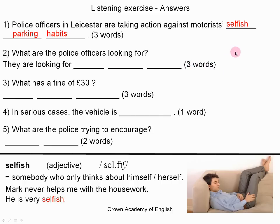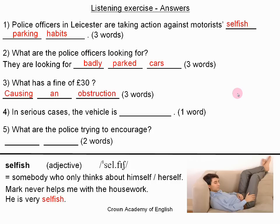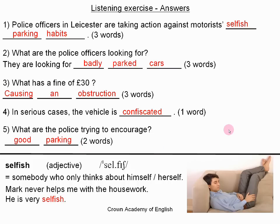Question 2: They are looking for badly parked cars. Question 3: What has a fine of 30 pounds? The answer is causing an obstruction. Question 4: I was looking for one word. In serious cases, the vehicle is confiscated. Question 5: What are the police trying to encourage? The answer is good parking. So those are the answers to the questions.